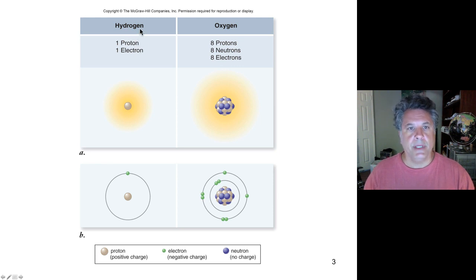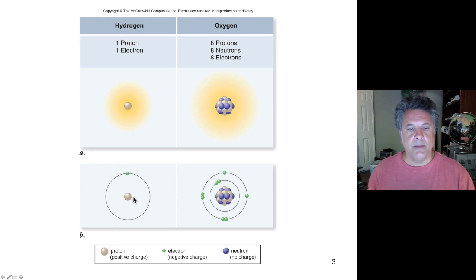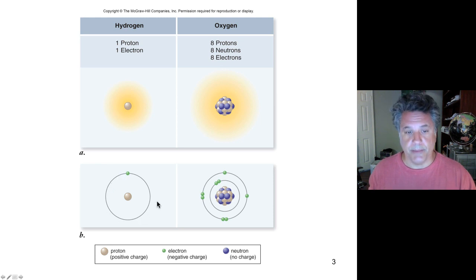Hydrogen is the only element that does not have a neutron. The electron is found in a probability distribution around that proton, in orbitals around the nucleus. We can represent that schematically, showing the proton and the one electron in hydrogen around that proton. One notion to disabuse you of right away is that electrons are not found in orbits like the planets orbit around the sun — rather, they are found in orbitals.